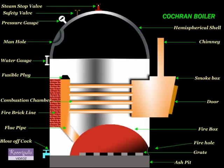The Cochran boiler is an internally fired, vertical, low pressure, fire tube, stationary boiler. Since it has many horizontal fire tubes, it is a multi-tubular boiler. Now we shall see the various parts of the boiler and their functions.